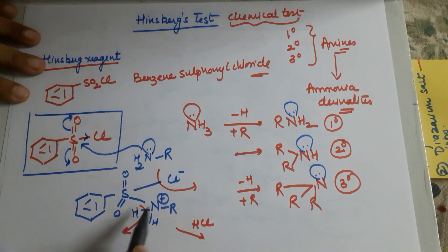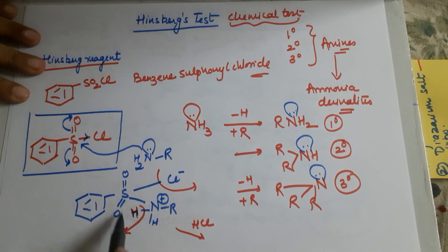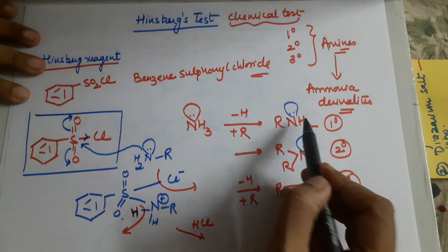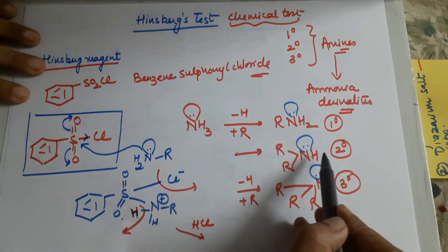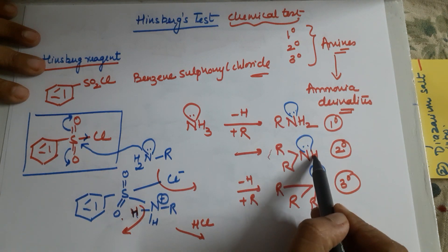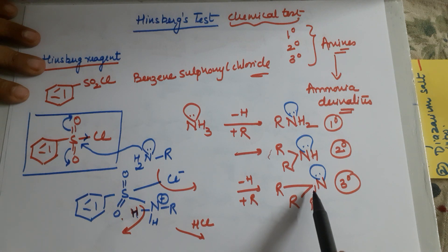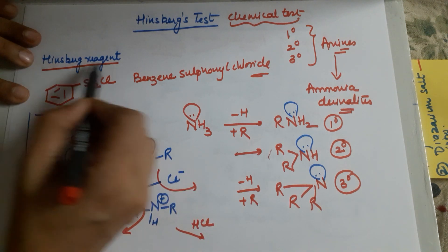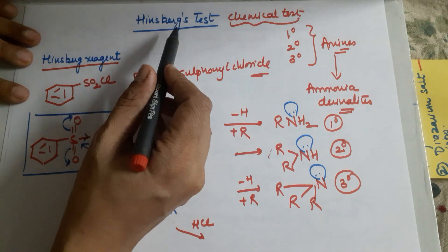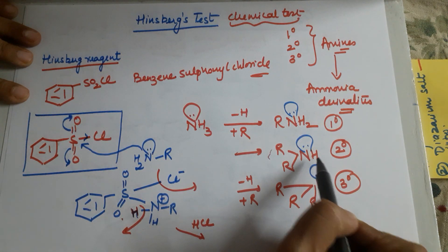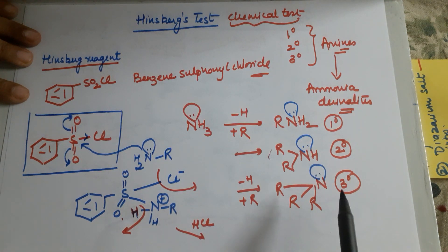So the key requirement is that the amine should have an H to be lost. Primary amine has H — yes. Secondary amine has H — yes. Tertiary amine has H — no. So tertiary amine will not react because it will not have H to lose. In Hinsberg's test, reaction happens with primary and secondary amines but not with tertiary amine.